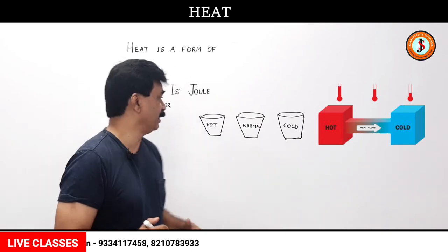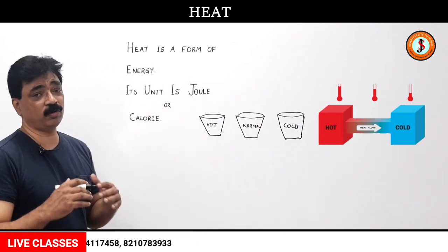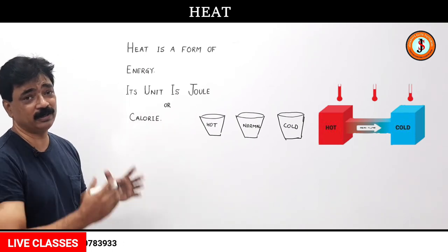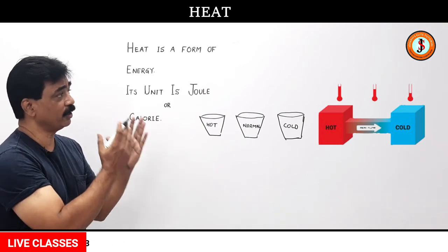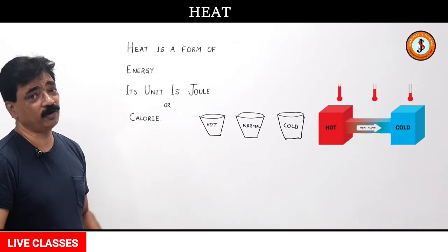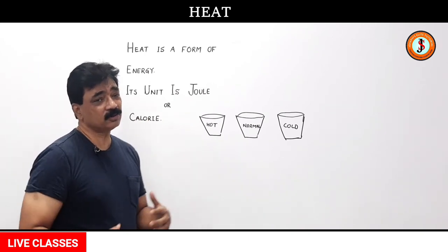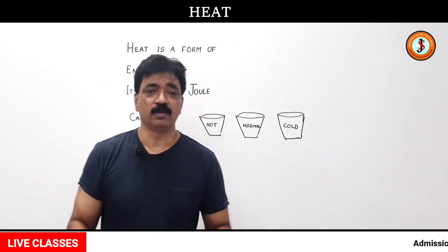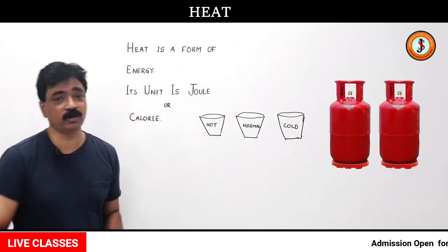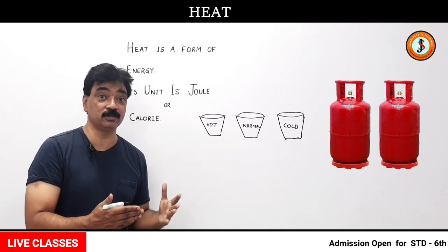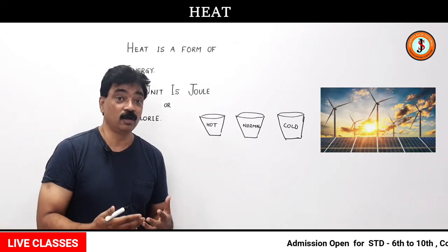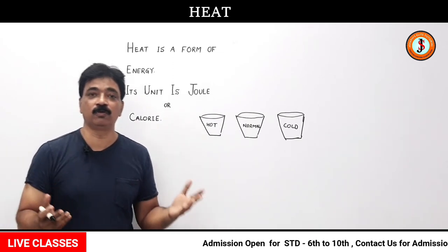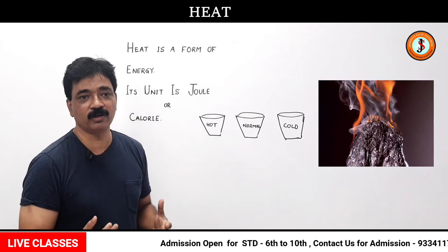So the first basic understanding of heat: heat is a form of energy, and heat flows from a body at higher temperature to a body at lower temperature. Sources of heat include fuels we burn such as LPG, solar energy from the sun, friction by rubbing, and burning of coal.